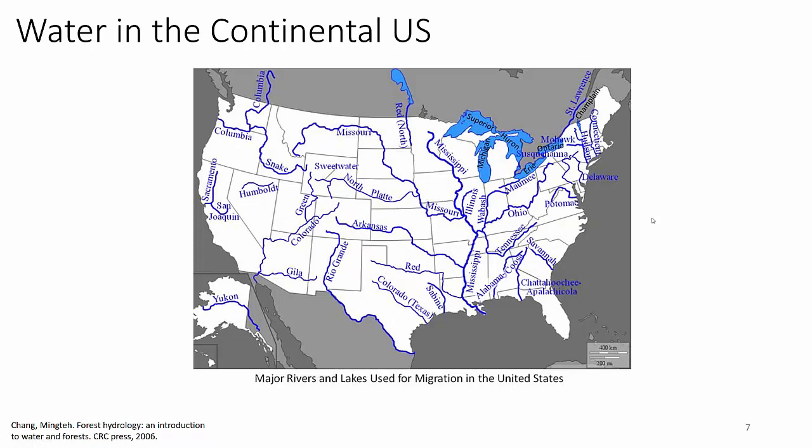We can see how water flows on the landscape at a macro, continental scale. You could draw lines between all the rivers and effectively define the watersheds just by drawing midpoint lines between them. That concept is very much what we use in watershed delineation.